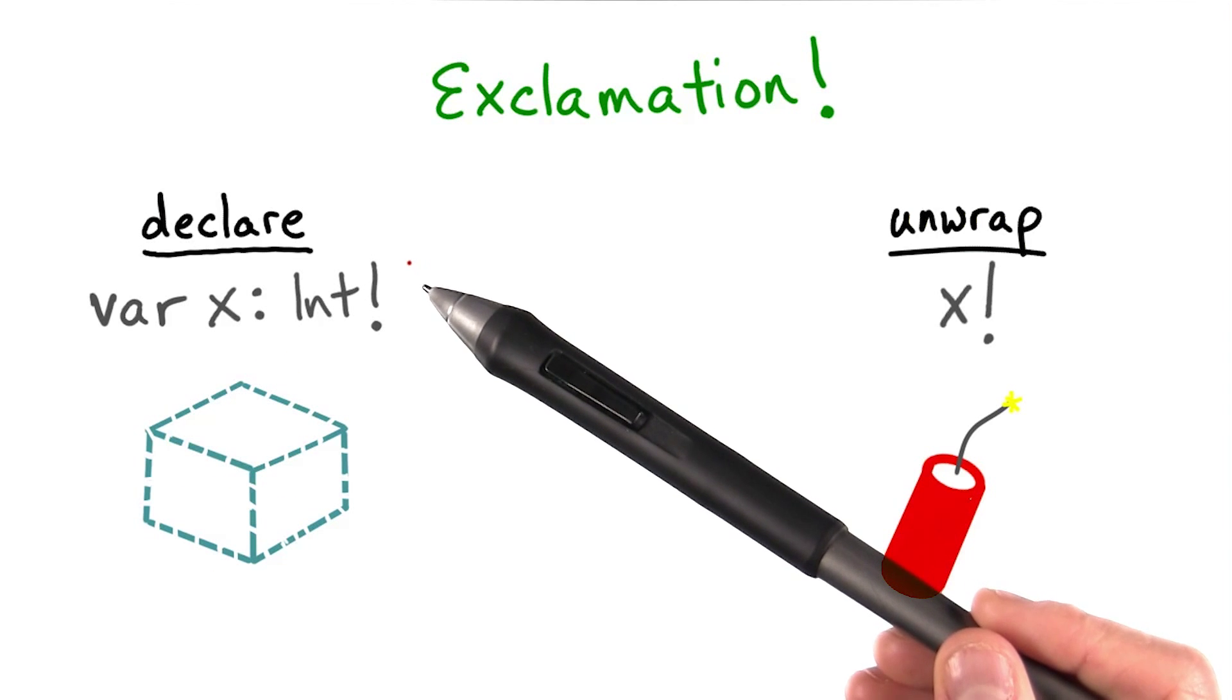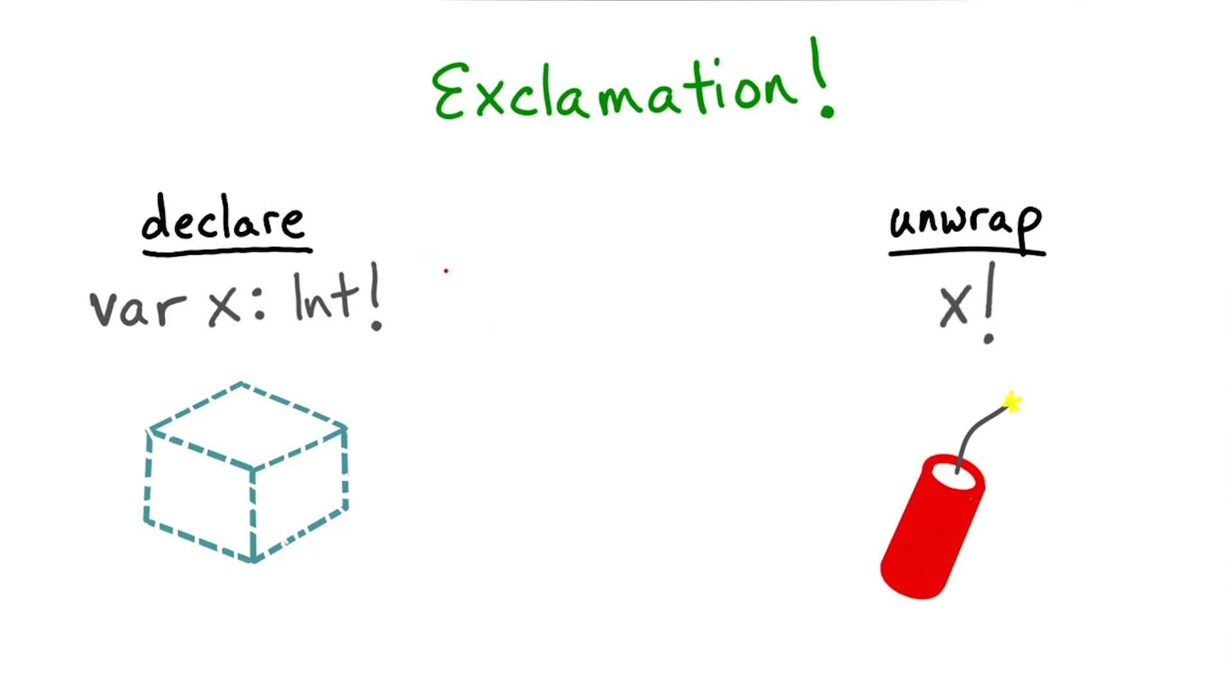It is an optional, so it can store a value or nil. But it's as if it's a very fragile wrapped package that immediately falls open when it's picked up. Because we don't unwrap it carefully, if there's a nil value inside, bad things can happen.